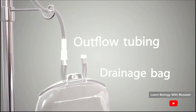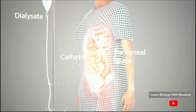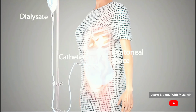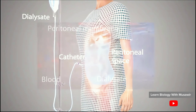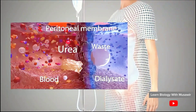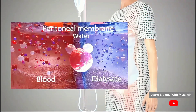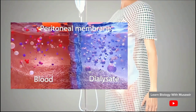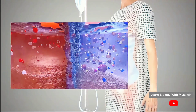Peritoneal dialysis occurs in exchange cycles, each with three phases. In the infusion, or fill, phase, one to two liters of dialysate infuse by gravity into the peritoneal space. In the dwell phase, the dialysate stays in the cavity for a specified time. Here, the vascular peritoneum acts as a semipermeable membrane, allowing the exchange of wastes, fluids, and electrolytes through osmosis, diffusion, and filtration.